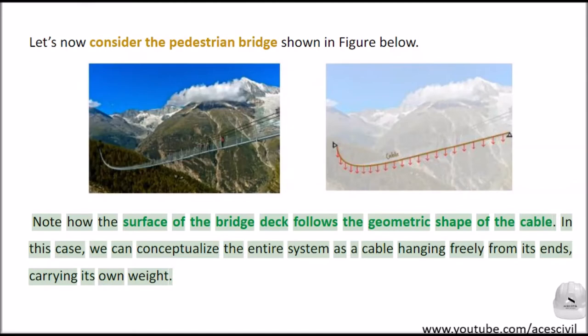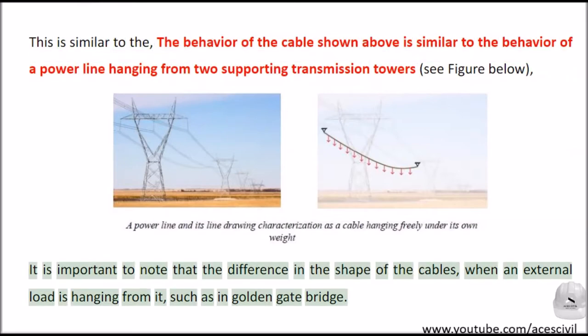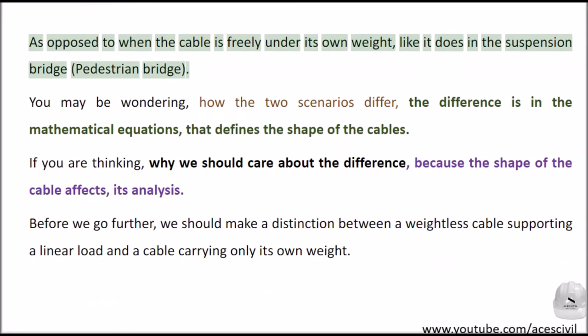Let's now consider the pedestrian bridge. Note how the surface of the bridge deck follows the geometric shape of the cable. In this case, we can conceptualize the entire system as a cable hanging freely from its ends, carrying its own weight. This is similar to the behavior of the cables shown, which is similar to the behavior of a power line hanging from two supporting transmission towers.